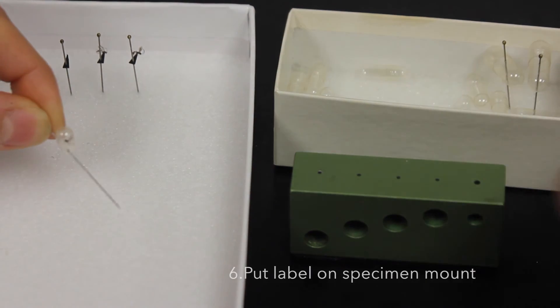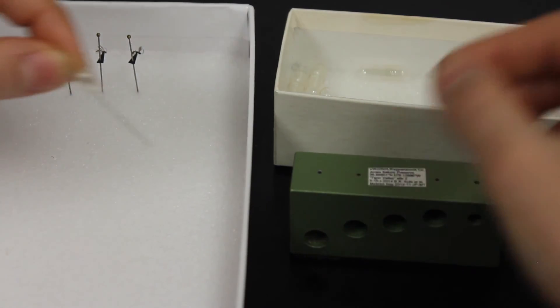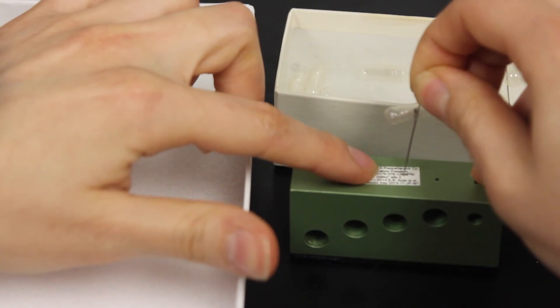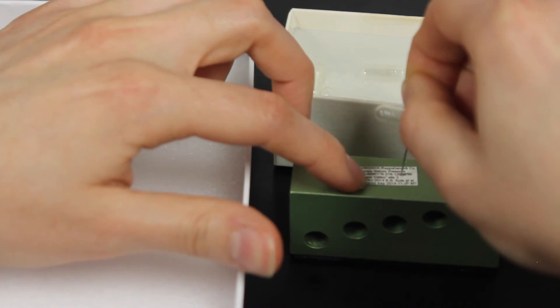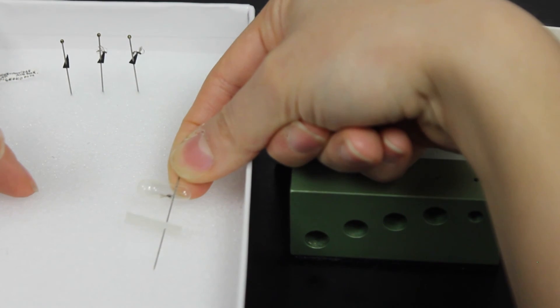And now we need to add a label. So we have a label here. We go to our third hole and push through. That's what it should look like.